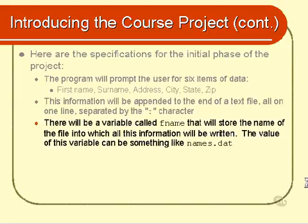I want to ensure that the name of the file you're storing all this information in is stored in a variable, and I want that variable to be called fname — obviously short for file name. The actual name of the file itself can be something like names.dat or contacts.dat — it's up to you. But I want that stored in a variable called fname, and whenever you refer to that file, like whenever you write data out to it, I want you to use that variable name.